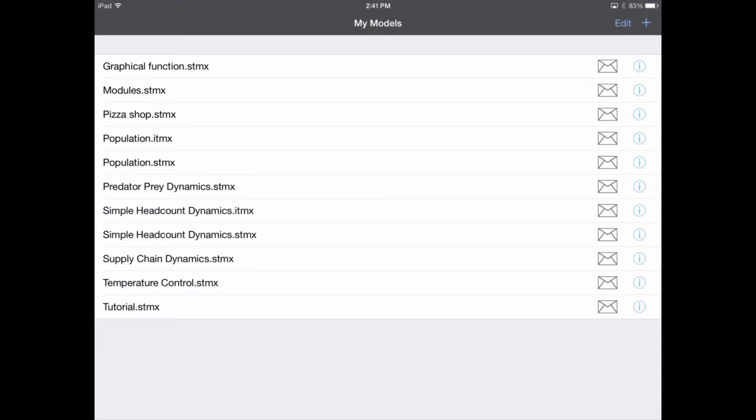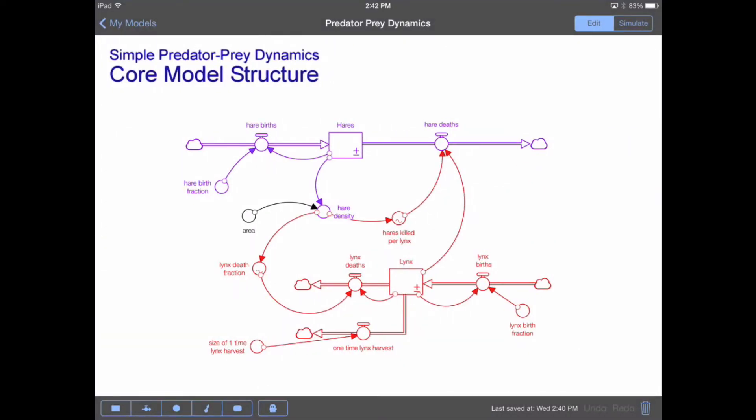The model I want to show you today is Predator Prey Dynamics, which is a simple two-stock model that shows the interaction between hares and lynx.